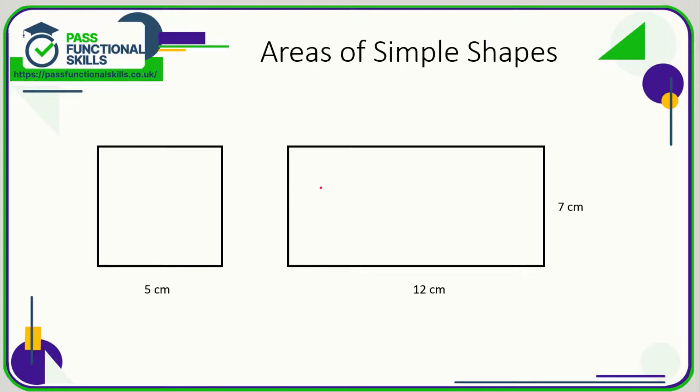Let's take a look at area. First of all, don't confuse area and perimeter. Perimeter is the distance around the outside, whereas area is the bit in the middle.